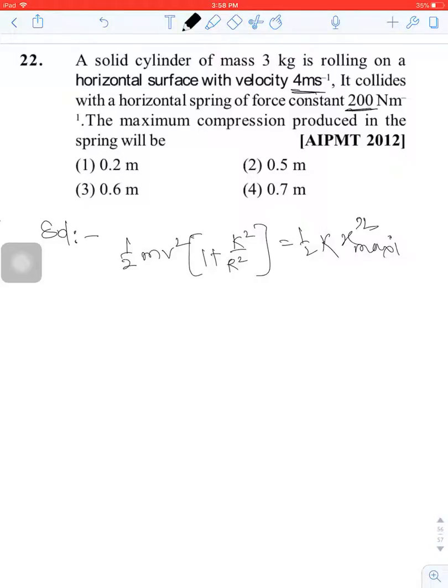M is equal to 3 kg, v is equal to 4 meters per second, and k squared upon r squared is equal to 1 by 2 for solid cylinder.